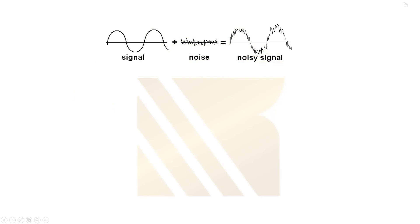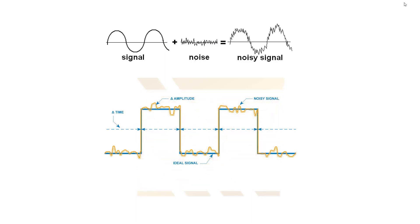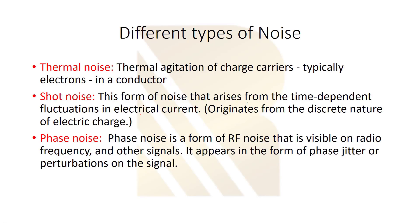In this picture, we can see the previous discussion: the signal is mixed with noise producing a noisy signal. The blue line shows our original signal, and the orange line is the distorted noisy version. At the expected sampling point where the amplitude should be 'a', the noise causes a data error. This leads into the different types of noise, starting with thermal noise.